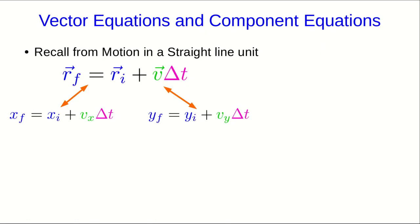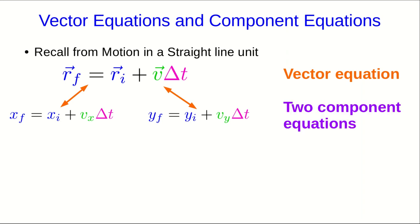Remember in the motion in a straight line unit, we had these equations for motion with constant velocity. And in particular, at the time, I pointed out that we can write them as a single vector equation, or as a pair of component equations. And what makes them so easy to work with is that we have one equation, which only involves x and the x component of velocity, and another that only involves y and the y component of velocity, and so Vx has no effect on y, and Vy has no effect on x.